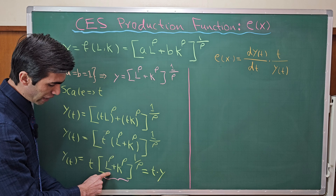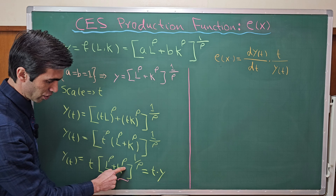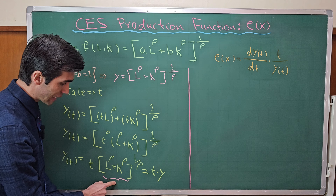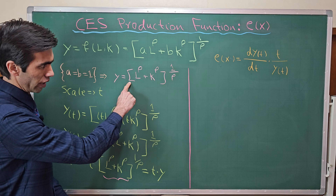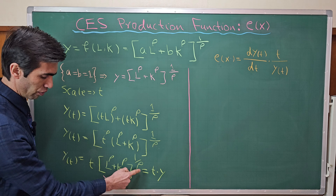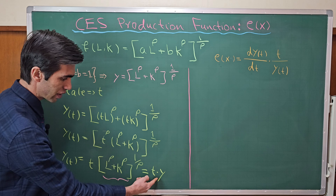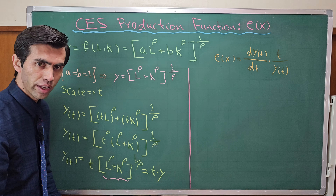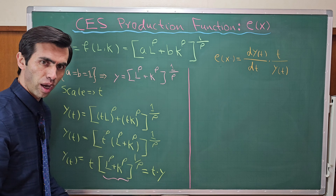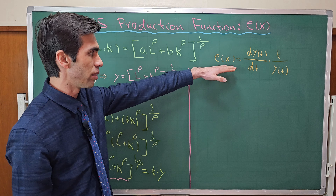If we clearly look at this side — l to the power of rho plus k to the power of rho, whole to the power of 1 over rho — it is exactly equal to y. So instead of writing that whole expression, we can simply write y. Therefore y(t) is equal to t multiplied by y.